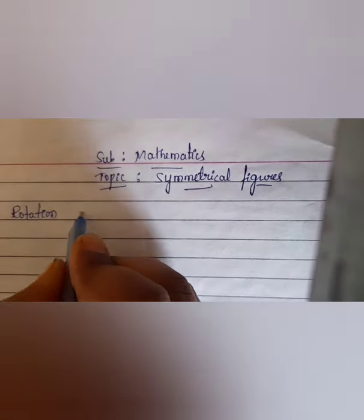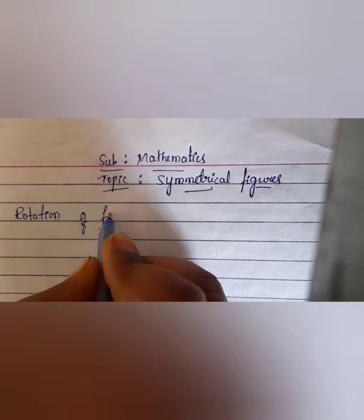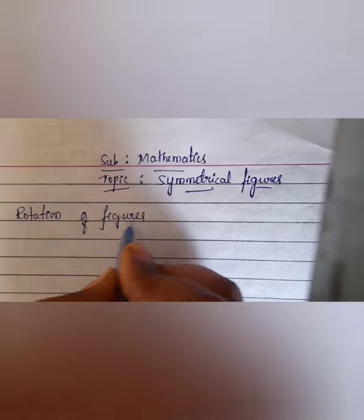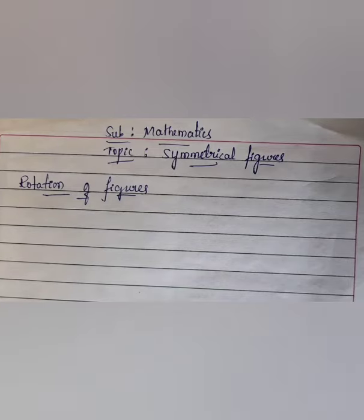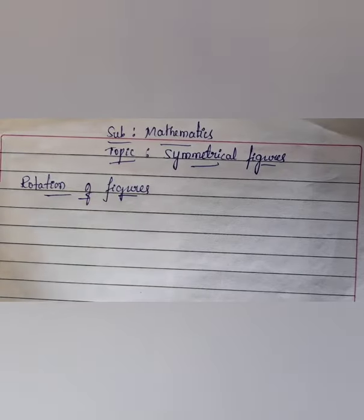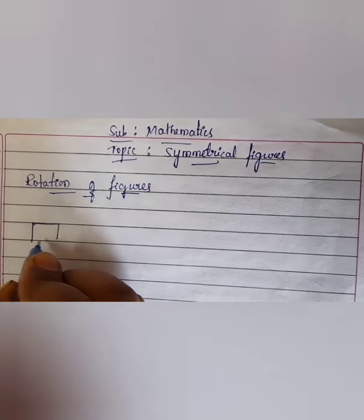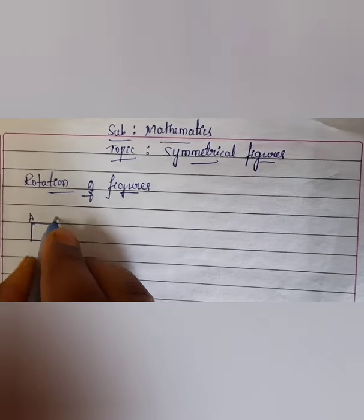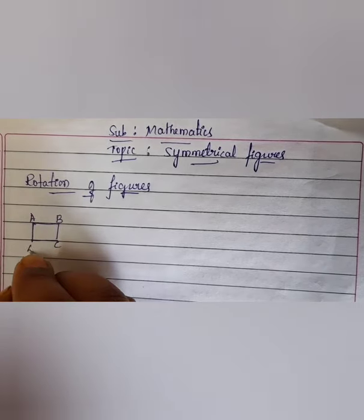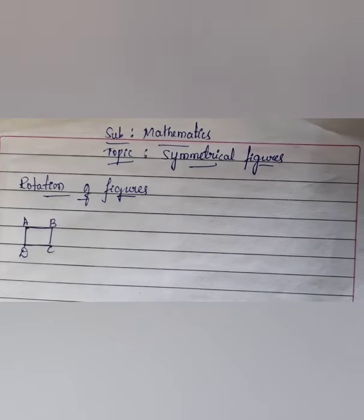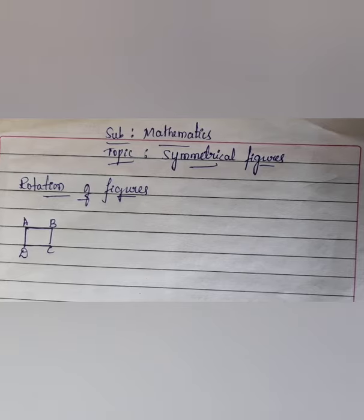Next we move on to rotation of figures. Let's see the rotation of the square. Observe the figure with corners labeled A, B, C, D. A quarter turn means a one-fourth turn.